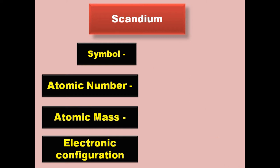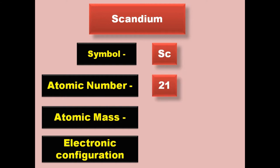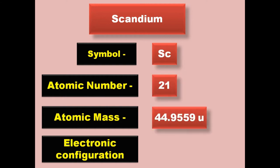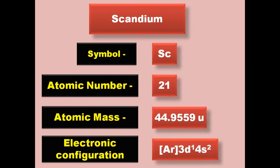Scandium has symbol Sc, atomic number 21, atomic mass 44.9559, electronic configuration [Ar] 3d1 4s2. Scandium is a transition metal and exists in solid form at room temperature.